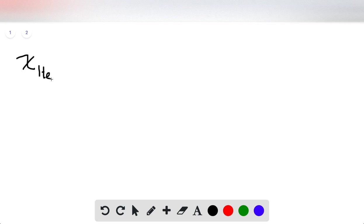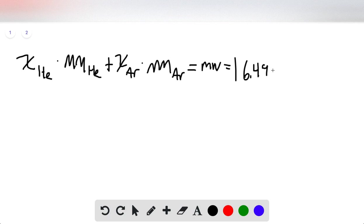The mole fraction of helium times the molar mass of helium plus the mole fraction of argon times the molar mass of argon equals the molecular weight, 16.49 grams per mole, as we just found.